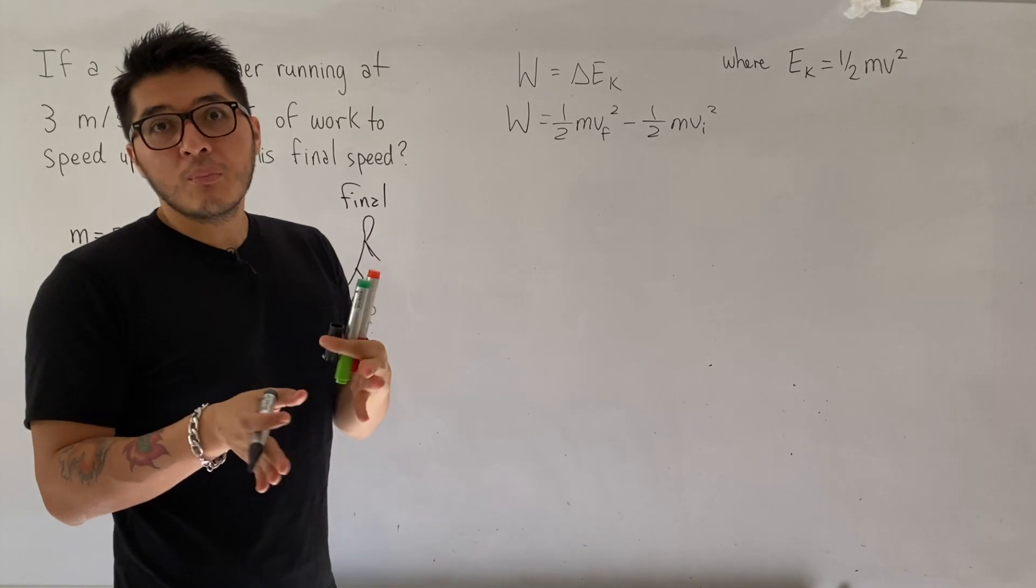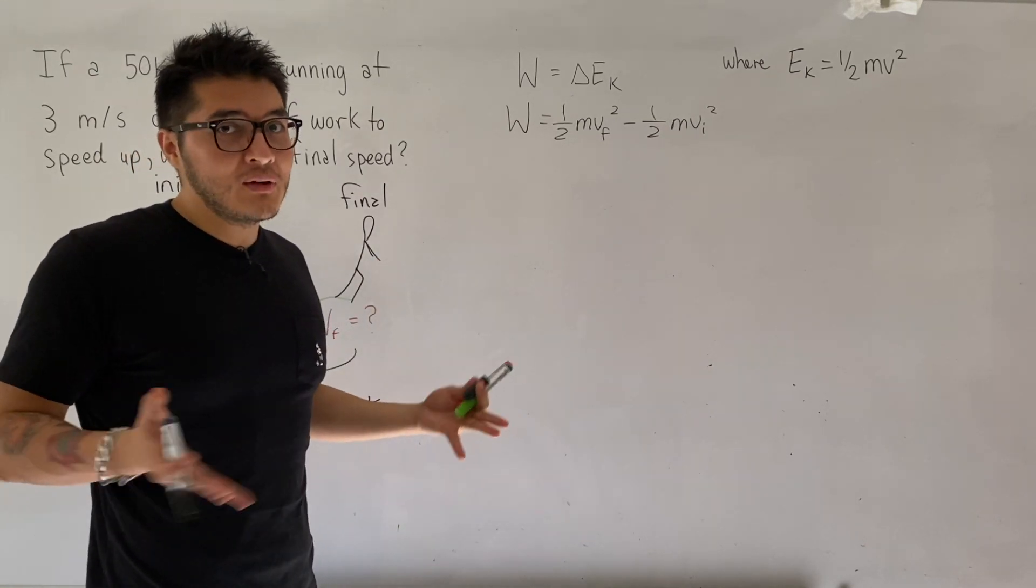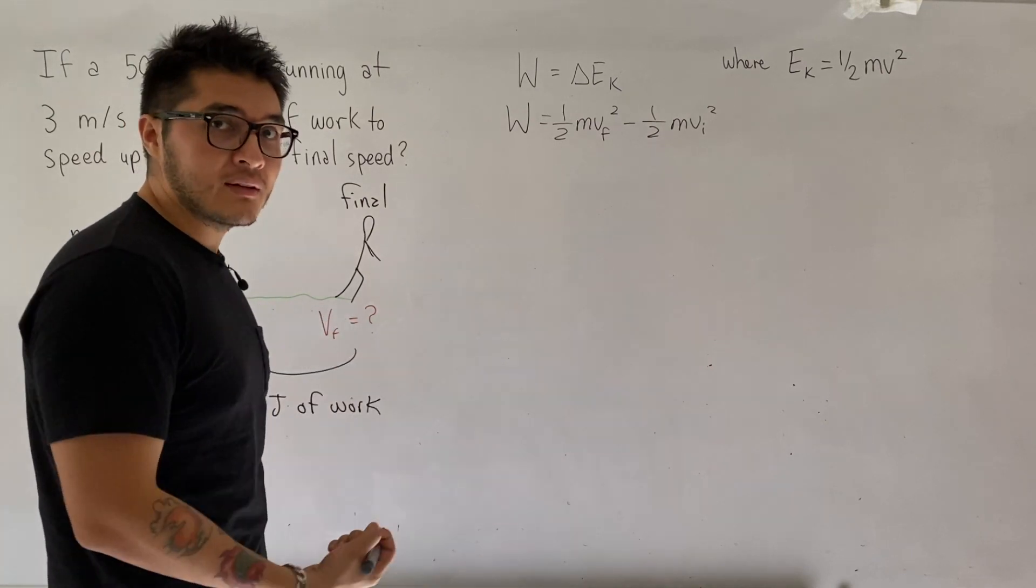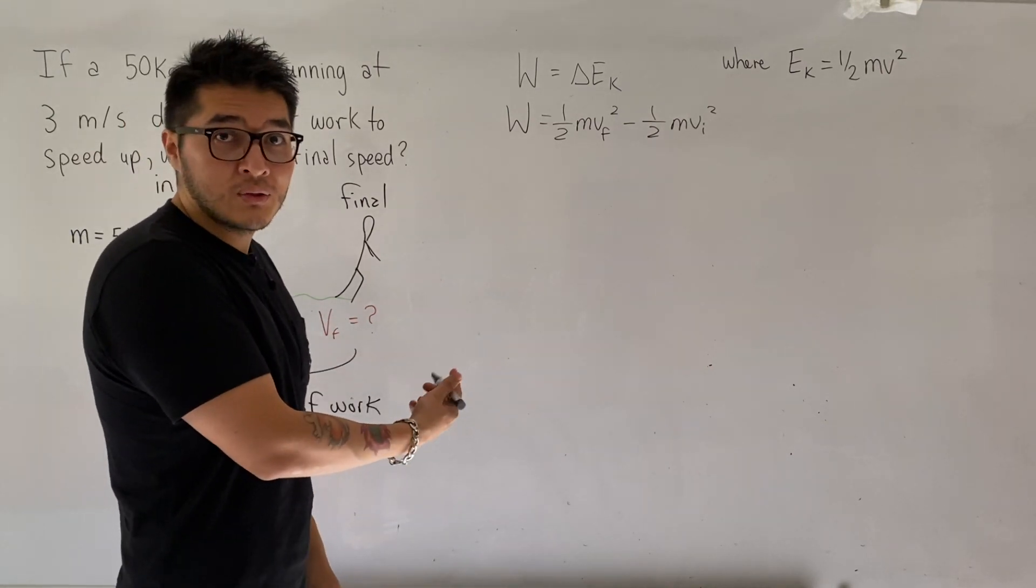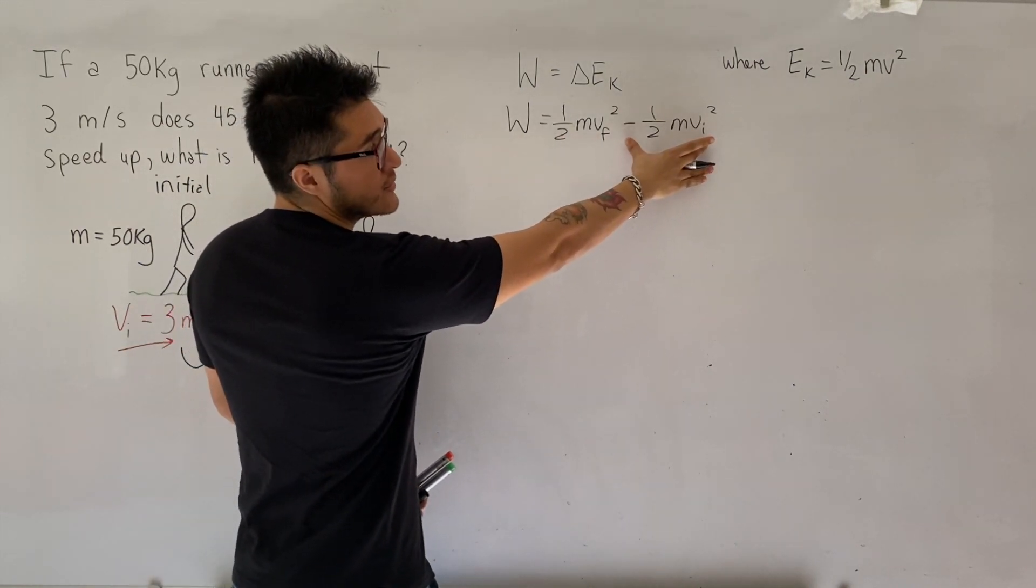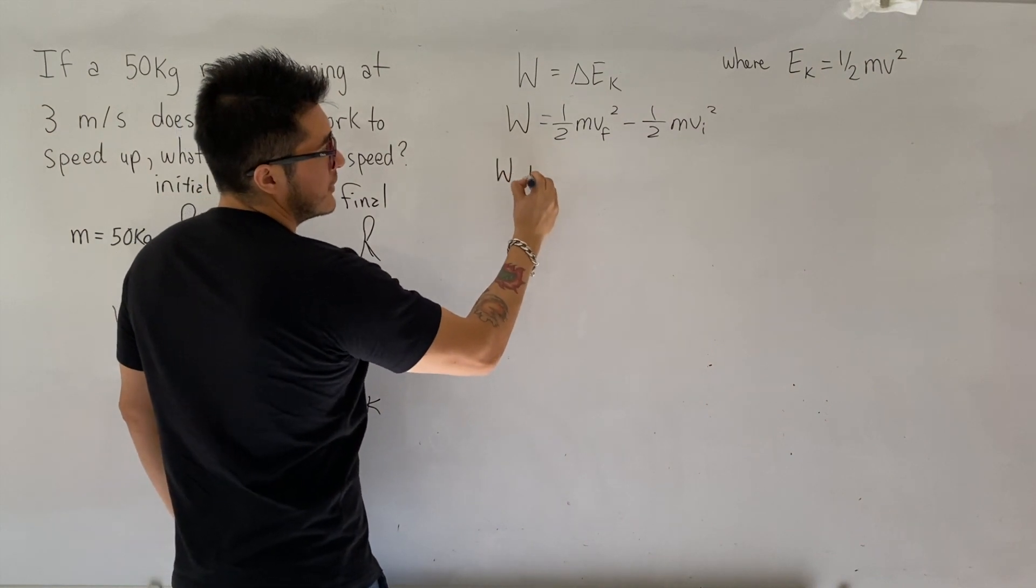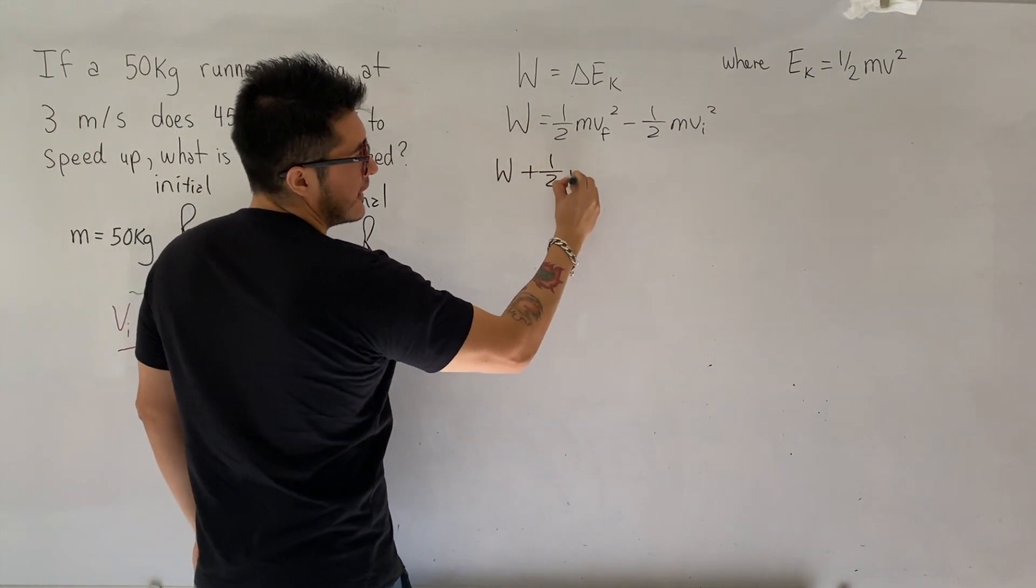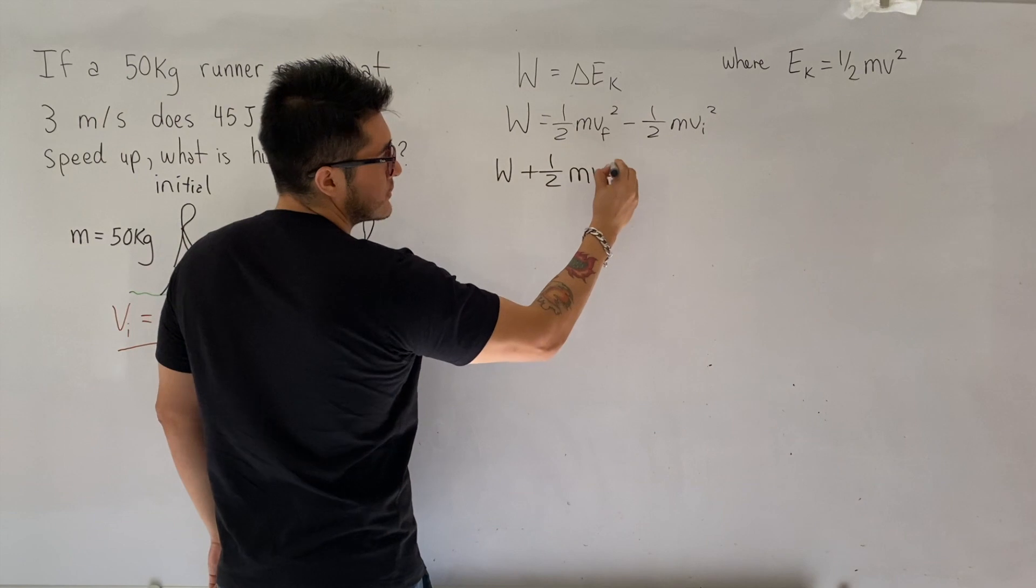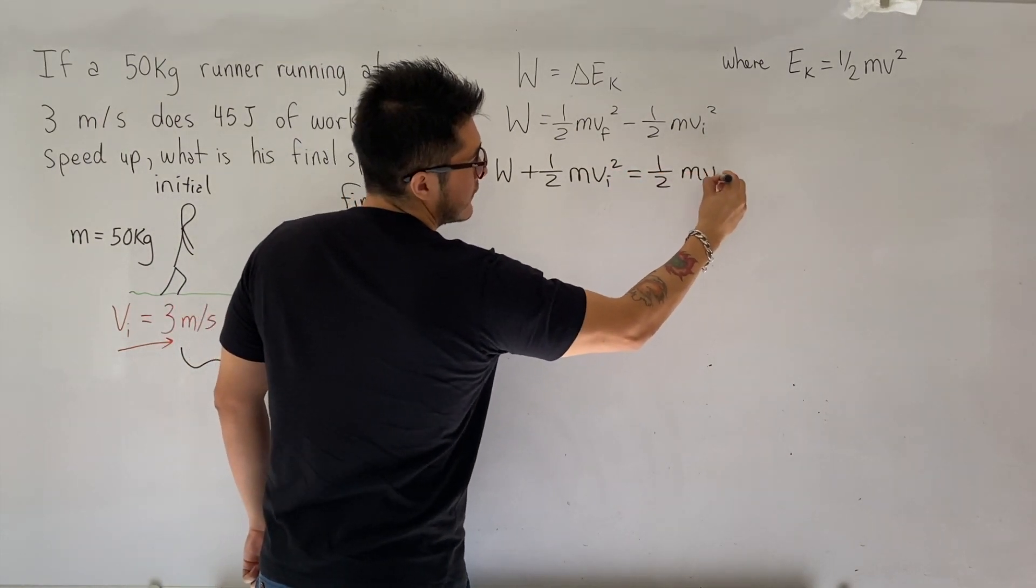So normally, you will plug in the numbers, but I recommend you play with the algebra. Algebra is more fun, so just give it a chance, practice it, because it's going to be helpful throughout this unit and beyond. So to isolate for v final, we're going to move this term to the other side of the equation. Work plus 1/2 mv initial squared equals to 1/2 mv final squared.